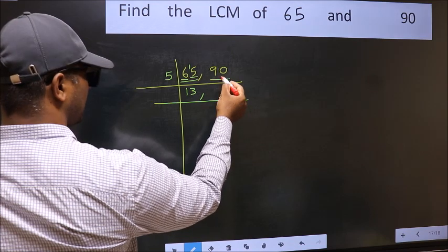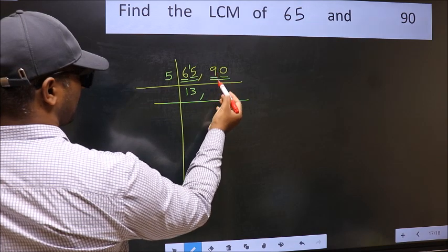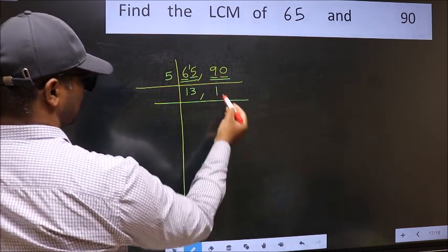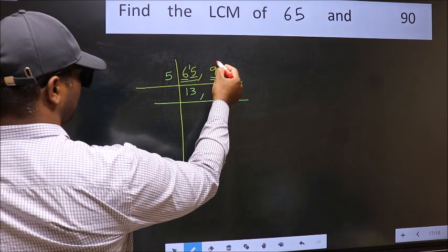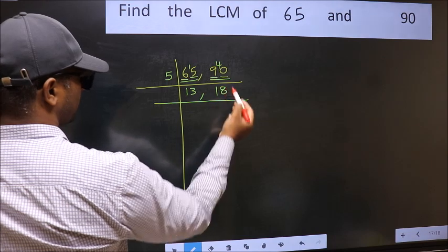The other number 90, last digit is 0, so this is divisible by 5. First number 9. A number close to 9 in the 5 table is 5 once 5. 9 minus 5 is 4, 4 carried forward 40. When do we get 40 in the 5 table? 5 eights is 40.